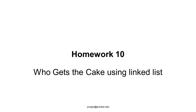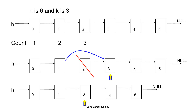The problem is that we need to remove people in a group by following a rule. Suppose there are n people and they are lined up. A number k is selected. Start from 1, 2, count to k — this person is removed from the group.